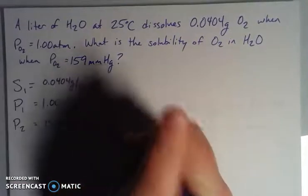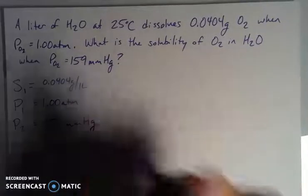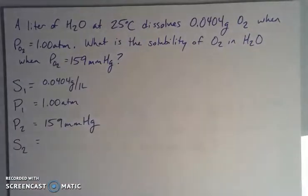I'm given a second pressure, which is my 159 millimeters of mercury, which we decided that we're going to have to convert. We'll stick with atmospheres because that's kind of the friendlier one. And it asks for the new solubility. So what happens when I change that pressure?